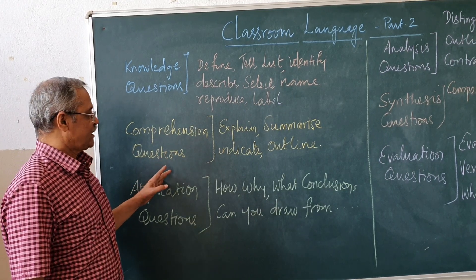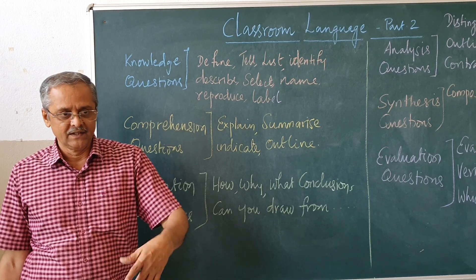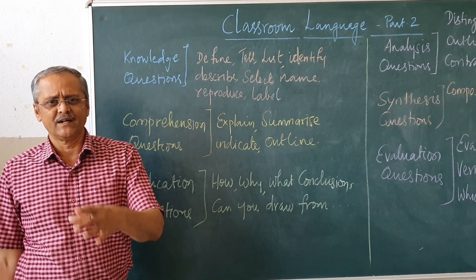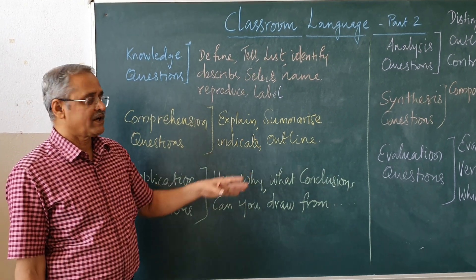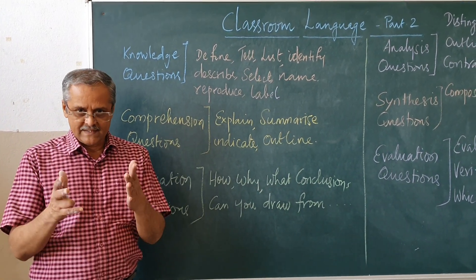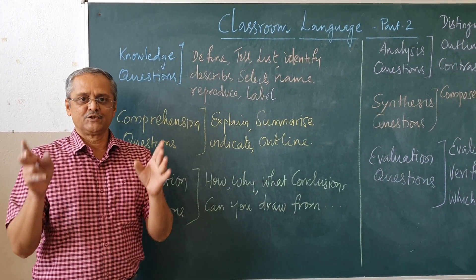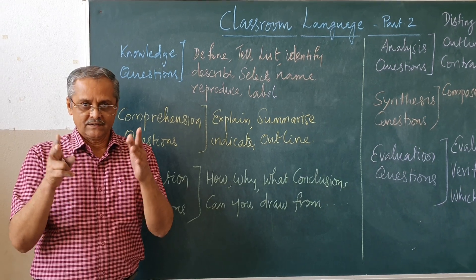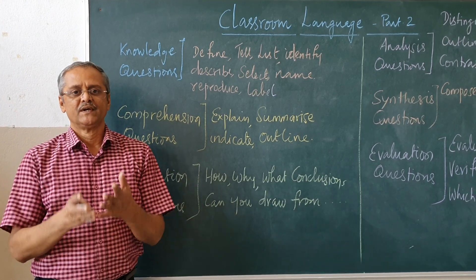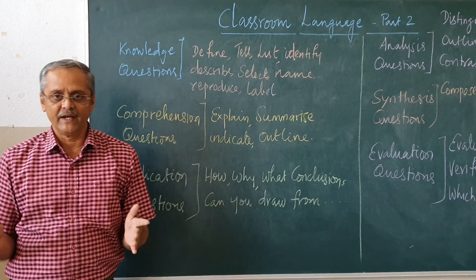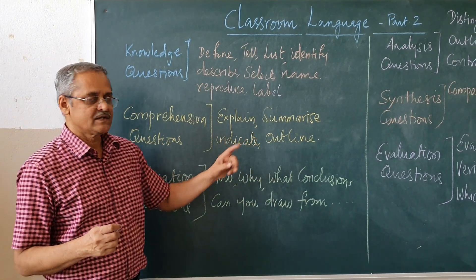Then comprehension questions come. Here we ask students to explain in brief, explain in detail, explain in 100 or 150 words how the water cycle takes place. Then summarize — that is, condense the content. Indicate the parts of a plant, outline the story, or do précis writing — that is, reduce the number of words in a passage without killing the meaning, by perhaps one third. These tasks test comprehension.